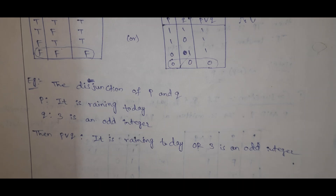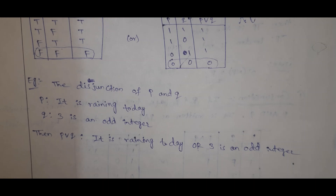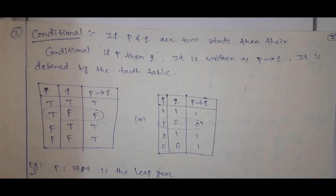The AND (conjunction) is true when both are true. The disjunction is false only when both are false; all remaining are true.